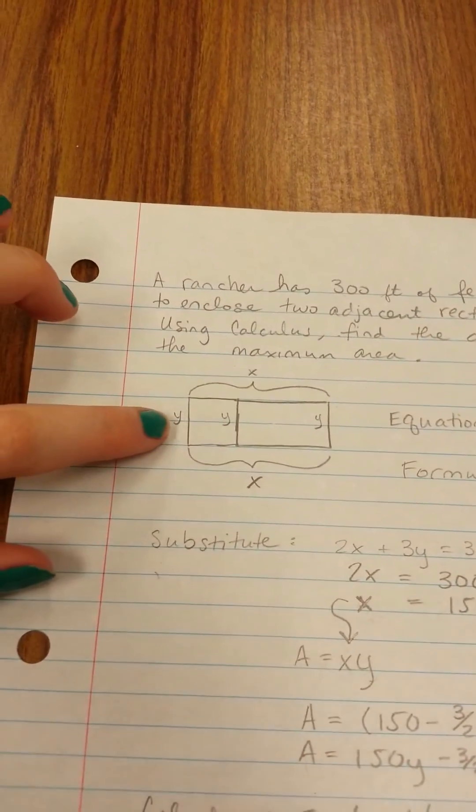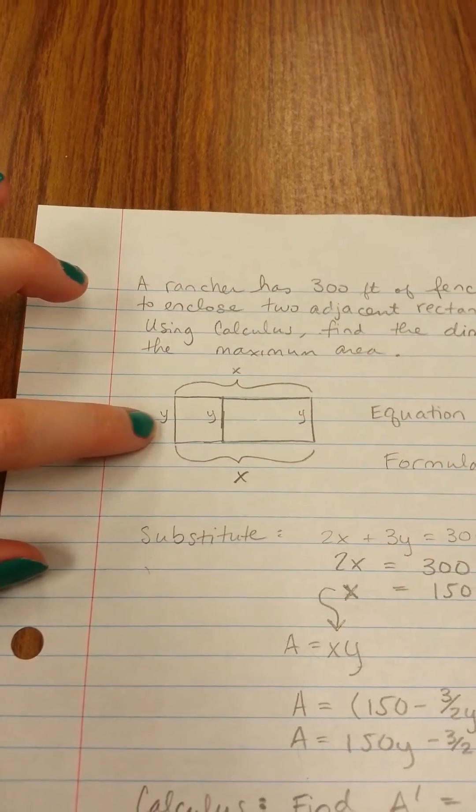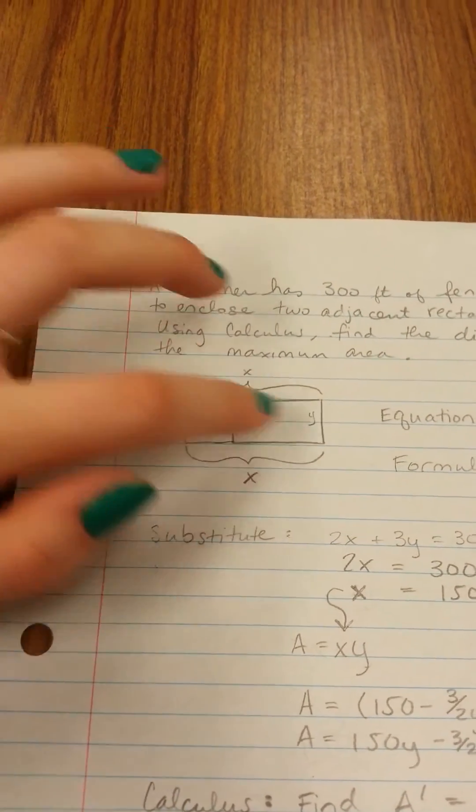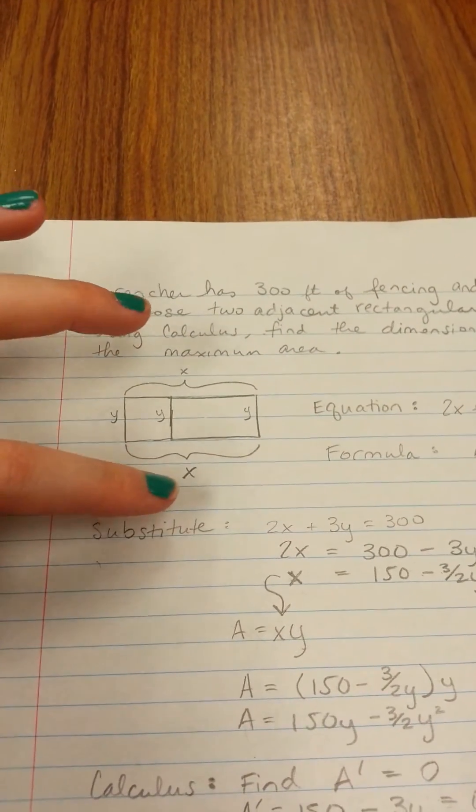So try to draw a picture, and we know that all these lengths are going to be the same, so we're going to call those Y. And we know that these two lengths are going to be the same, so we call those X.